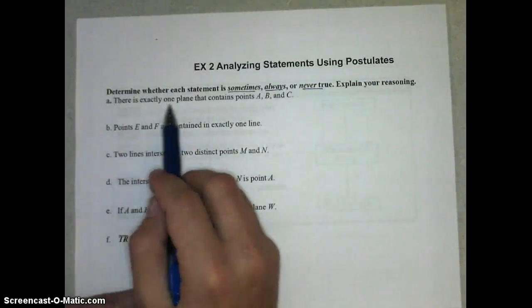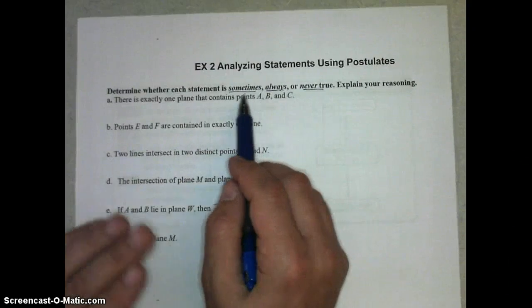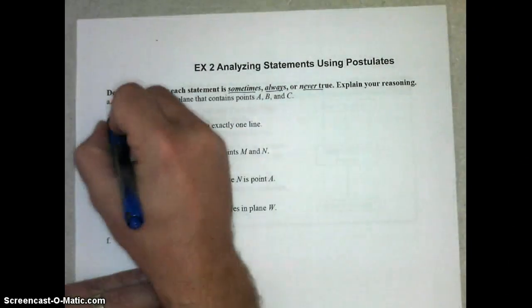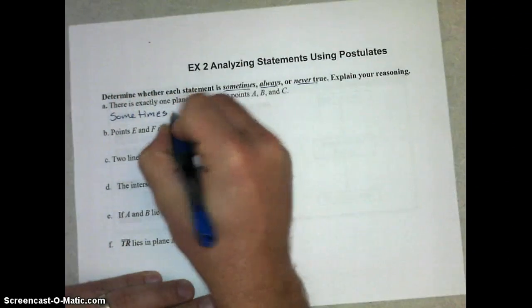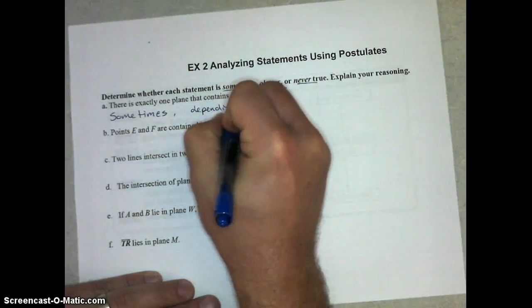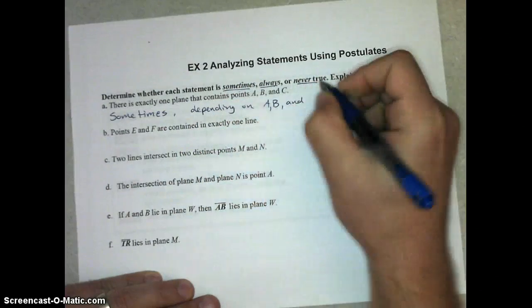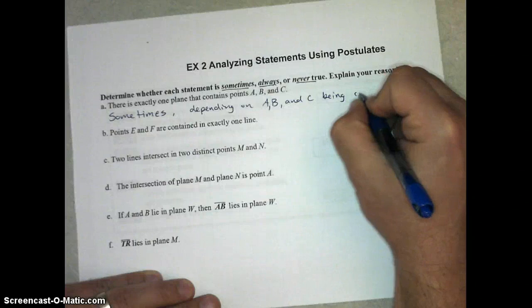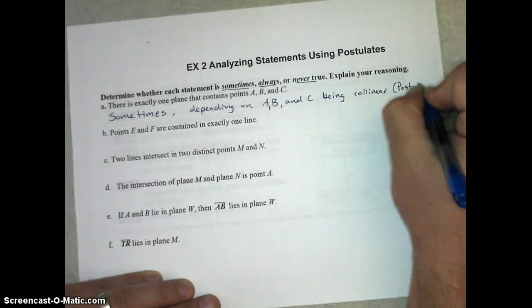So let's take a look at 1A. There's exactly one plane containing points A, B, and C. Well, without knowing any more about these, this could be true or false, depending on whether A, B, and C are collinear. So this is sometimes true, and it depends on whether or not A, B, and C are collinear. And that's postulate 2.2.